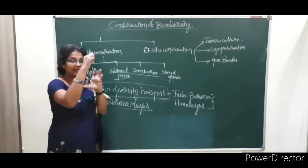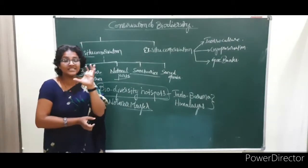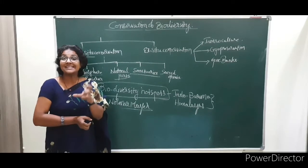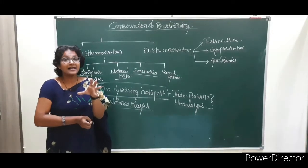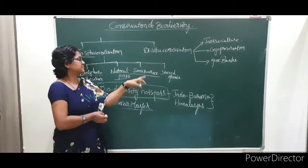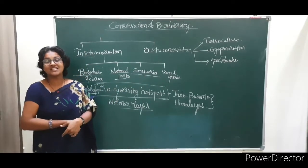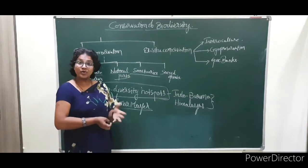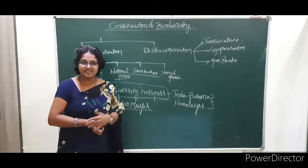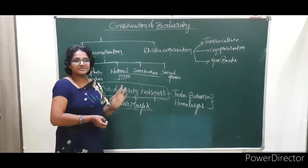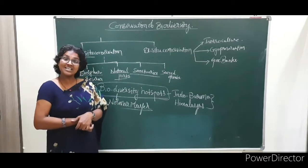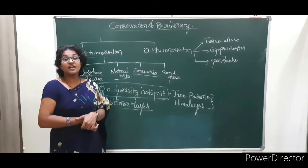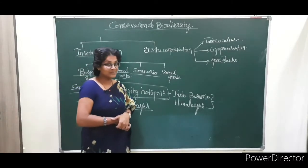Sanctuaries are specially designed for protecting endangered species. They have buffer zones, and eco-tourism is allowed for scientific and research purposes, as long as animals are undisturbed. Examples include Papikondalu Sanctuary, Eturnagaram Sanctuary, Ankonga Sanctuary, and Koringa Sanctuary.